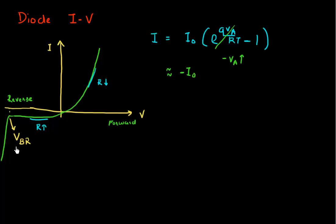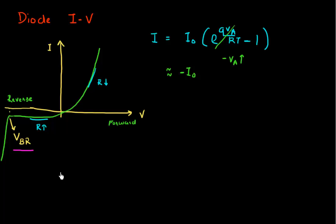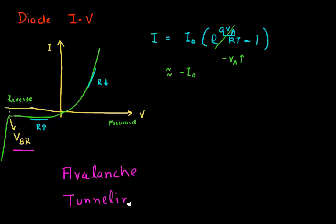What's happening over here is what I want to describe in this playlist. We need some new physics to describe what's happening in this breakdown region. The two things I want to focus on: the very first thing is avalanche — I want to discuss this process of avalanche of carriers. And I also want to discuss this process of tunneling. Both of these transport phenomena play a role in this breakdown voltage.